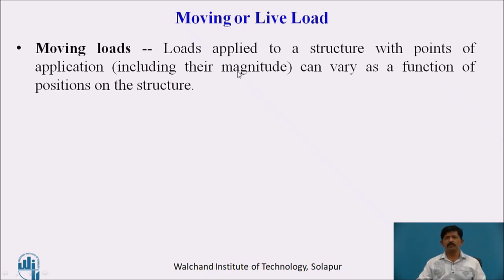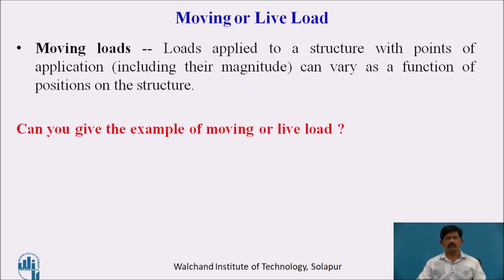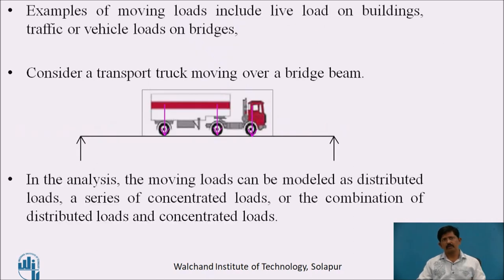The rolling load or moving load can have different magnitudes at different positions. Examples of moving loads include live loads on buildings, and traffic or vehicle loads that move along a bridge — for example, a truck moving over a bridge span.